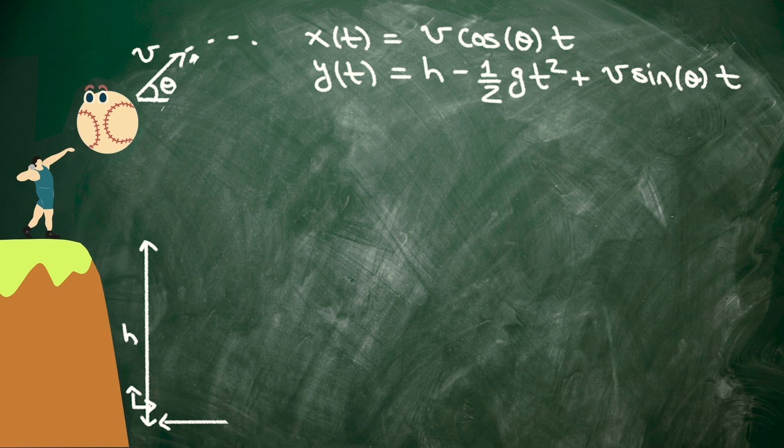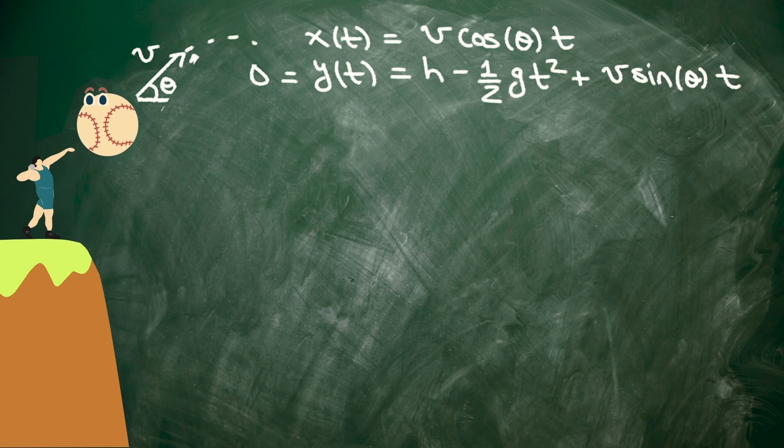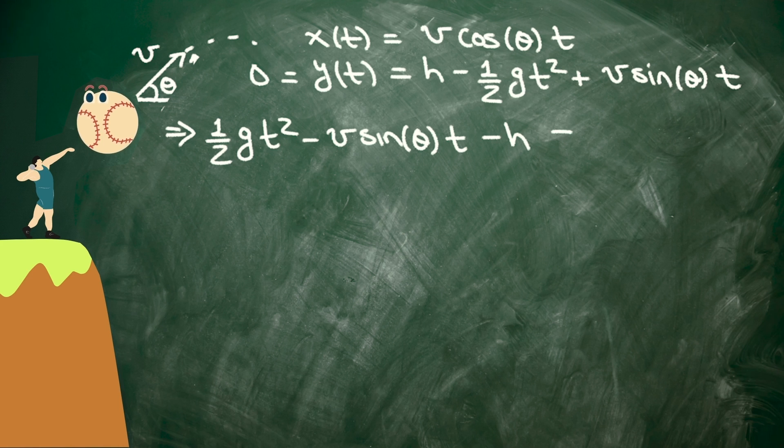Now, our strategy is to set the y coordinate equal to 0, solve for the time, and then plug that in to the x coordinate. So we have a quadratic equation here for t: 1 half g t squared minus v sine of theta times t minus h equals 0.